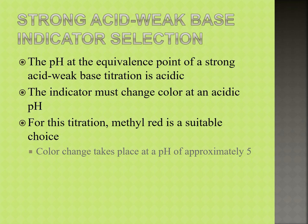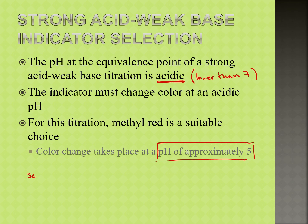Much like when we were talking about our weak acid-strong base, we have to pick the right type of indicator for a strong acid-weak base titration. The pH at the equivalence point is going to be acidic — lower than 7. So we have to pick an indicator that will change color in an acidic pH. We need something that's going to change color at a pH of around 4 or 5, because we want to see the color change at a pH similar to the equivalence point.